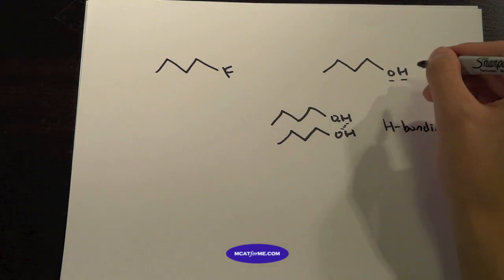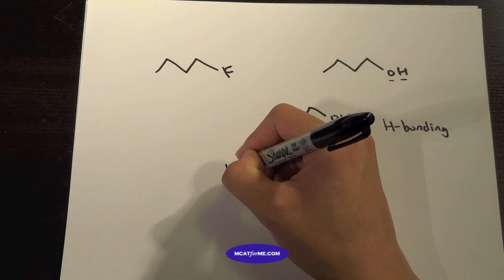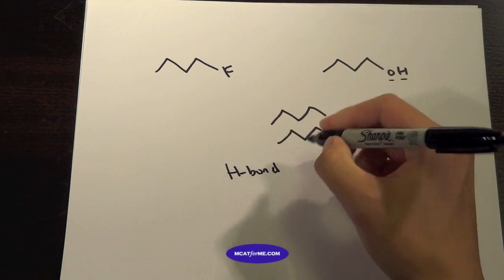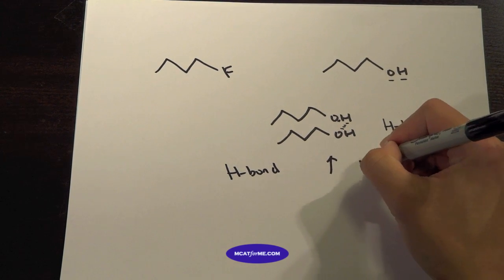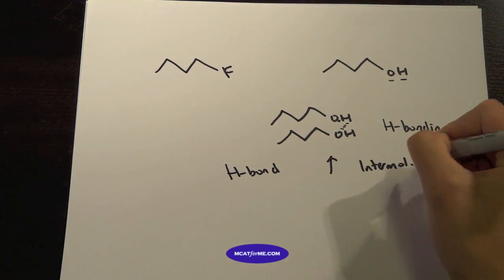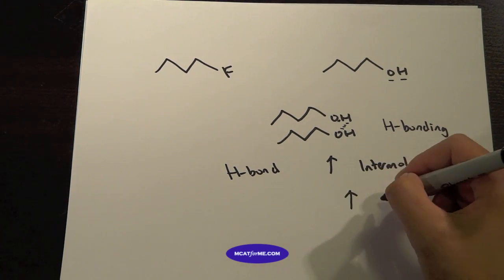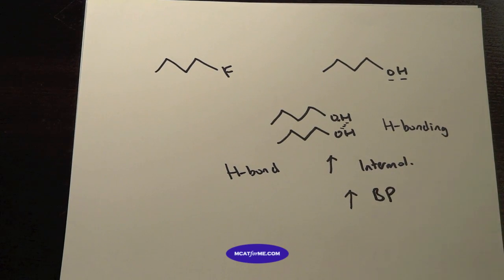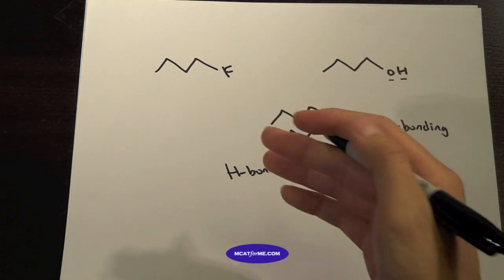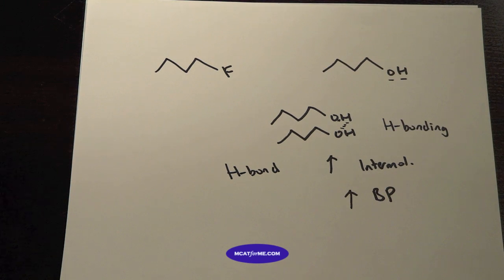So whenever you see an O and an H, that will dramatically increase your intermolecular forces, which will then increase the boiling point. So when we're increasing the hydrogen bonds, we increase the intermolecular forces, which increases the boiling point. And we see in this fluorine, there really are not that many intermolecular forces.